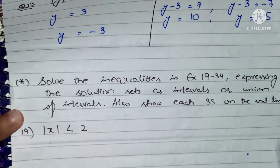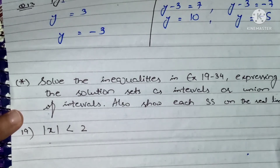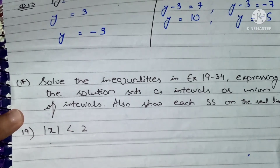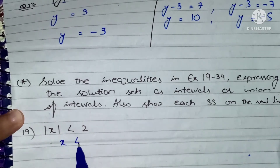I request you, if you have not seen the first lecture, then please see it, because it is a very important lecture. Now we will start with question number 19. We have a very simple question. First of all, we have a mod. What do we need to do? We will write two as positive, and also write two as negative.